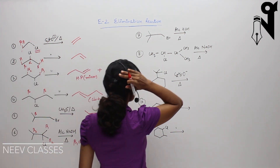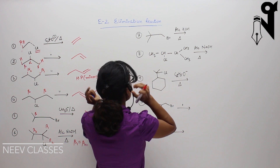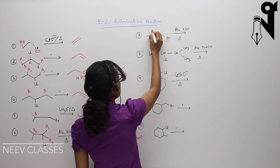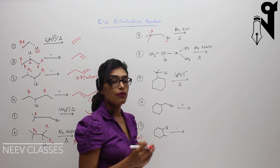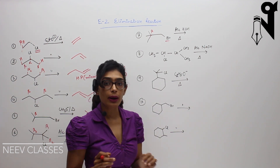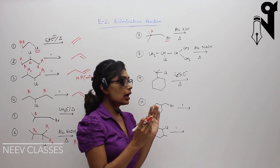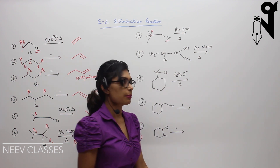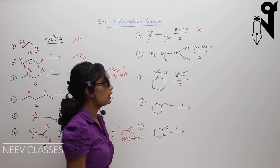For the seventh question, we have a bromine and this is the beta carbon. However, there is no hydrogen on this beta position. Since we require a beta hydrogen to carry out E2 elimination, without it the elimination reaction cannot take place — hence no reaction.